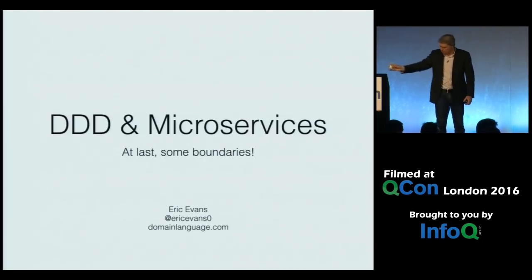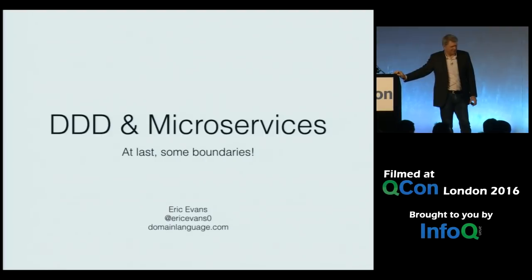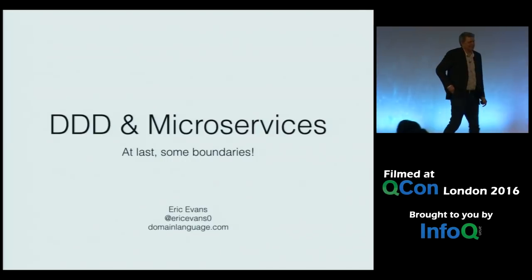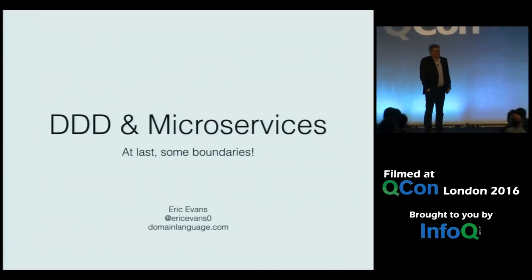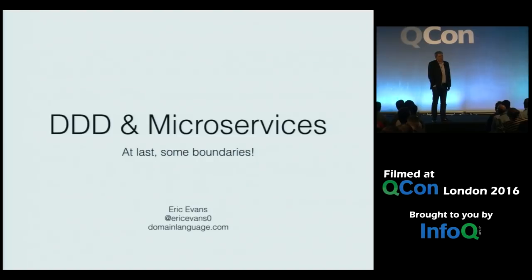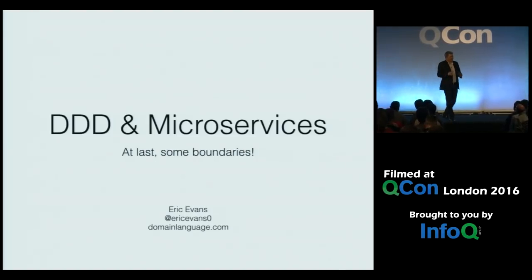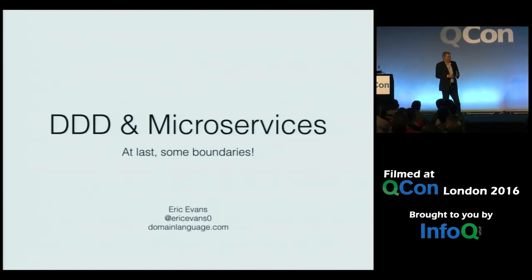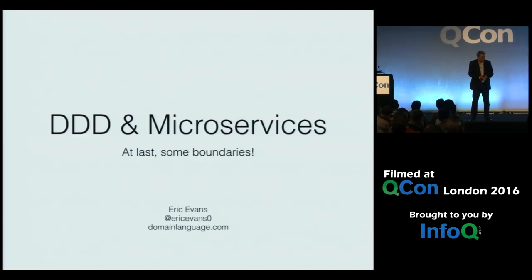If two contexts have part of the domain that they share, you call it a shared kernel — is that correct? Yes, the shared kernel. Do you have any thoughts on that with regards to microservices? I've always been a bit skeptical of the shared kernel — I think it's one you wouldn't want to use too often, and my skepticism has just steadily increased over the years. If I were using microservices, I wouldn't do it.